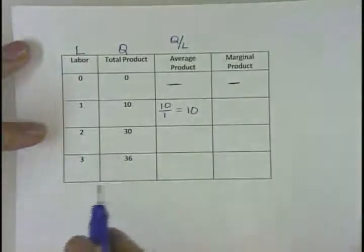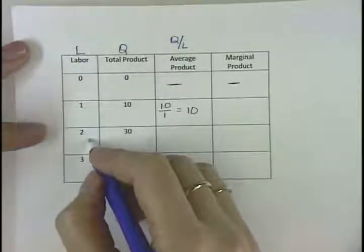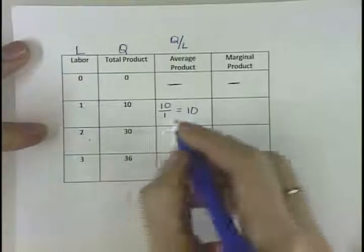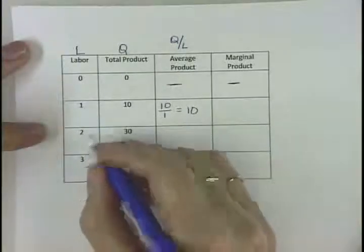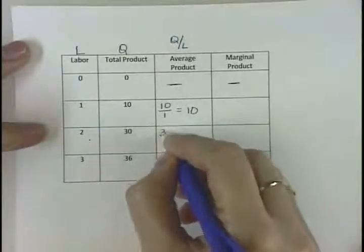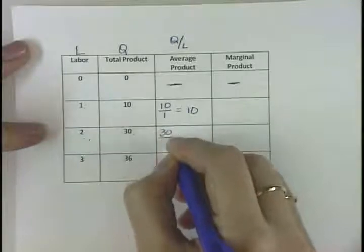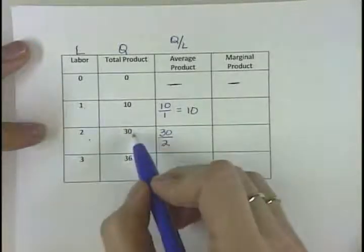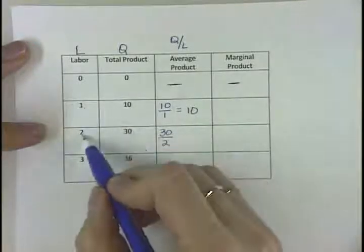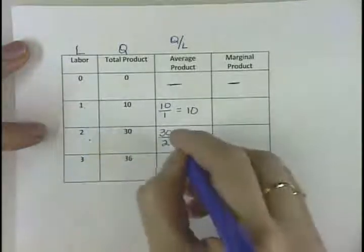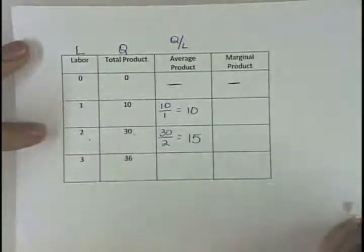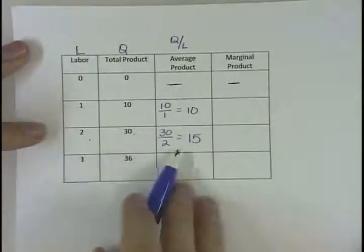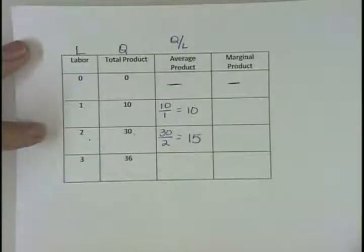For the average product when we have two units of labor, we're going to take Q divided by L — so we're going to take 30 divided by 2, the quantity divided by the labor, so that one should be 15. When we have two units of labor, on average each one produces 15 units.